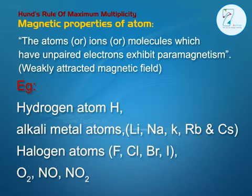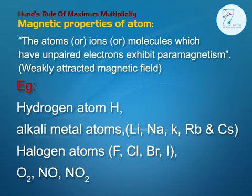Magnetic Properties of Atoms: Atoms, ions, or molecules which have unpaired electrons exhibit paramagnetism, which means they are weakly attracted by a magnetic field. Examples: Hydrogen atom (H), alkali metal atoms — Lithium, Na, K, Rb, and Cs — and halogen atoms — Fluorine, Chlorine.